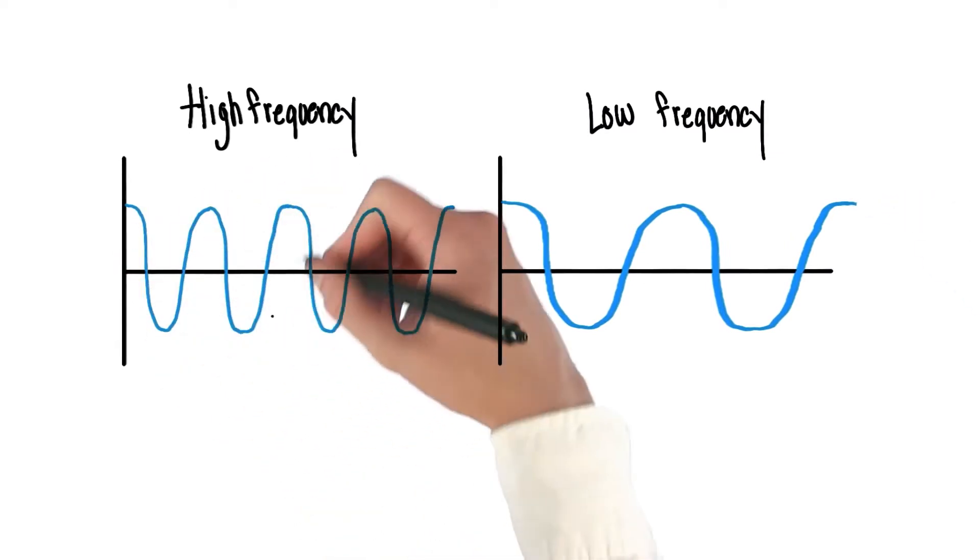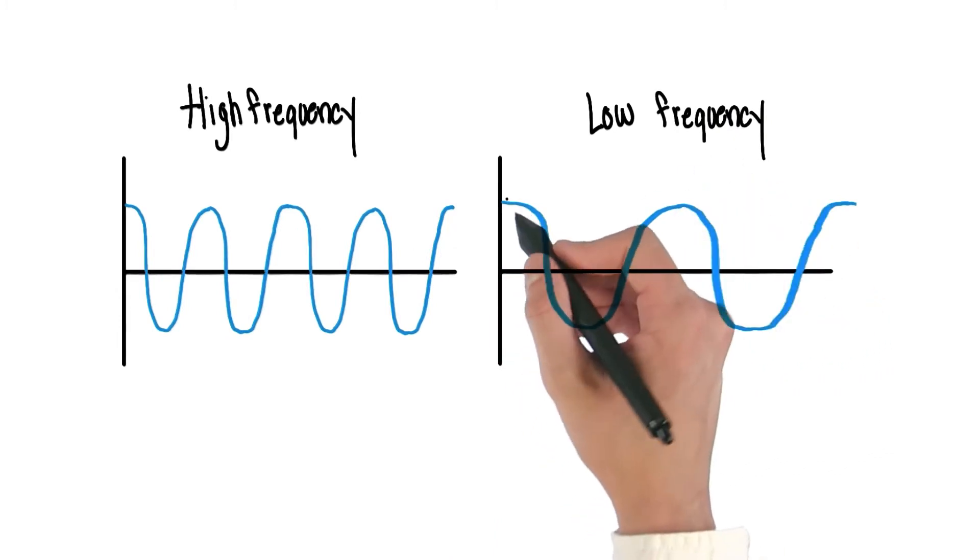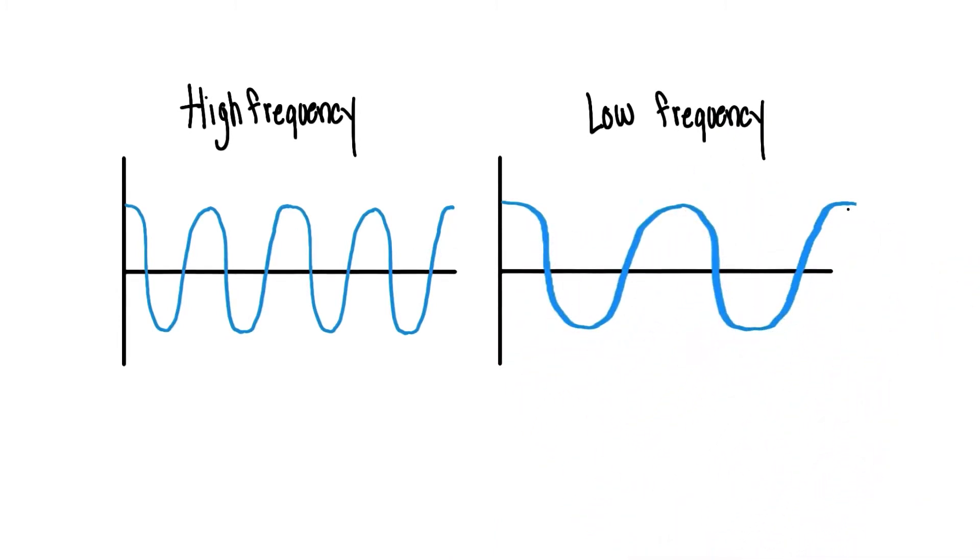So high frequency, lots of fast oscillations, low frequency, fewer waves per second, slower oscillations.